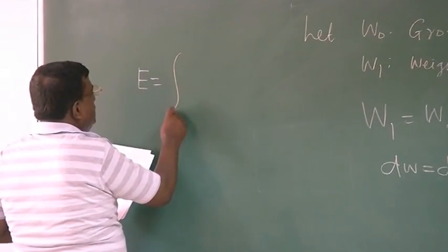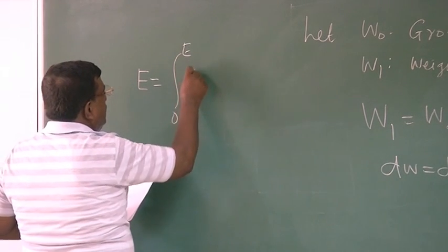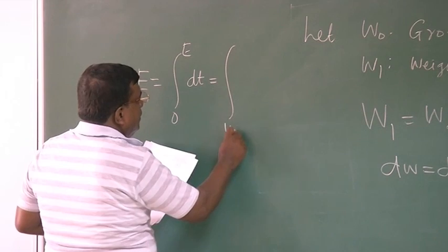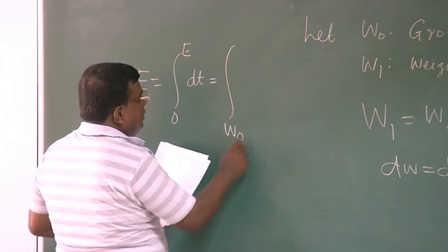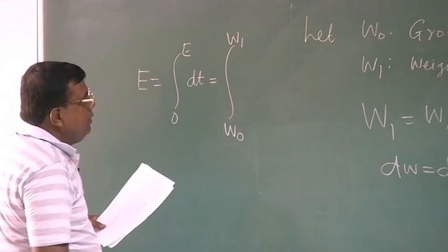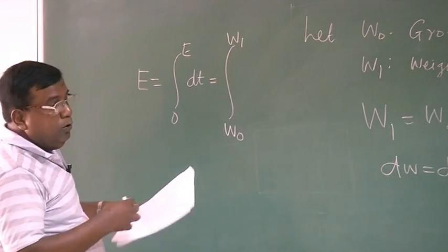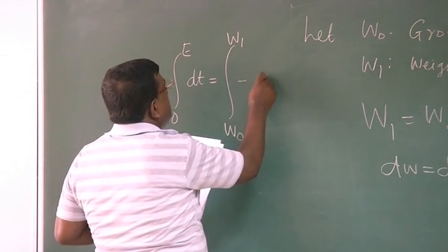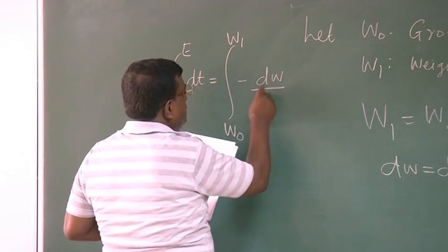Endurance will be zero to E, total time dt. And during the total time, the gross weight is W₀, and when the fuel weight is consumed, that is W₁. W₁ is the weight of the aircraft when no fuel, that means whole fuel is consumed. So I write minus dW by Cp.